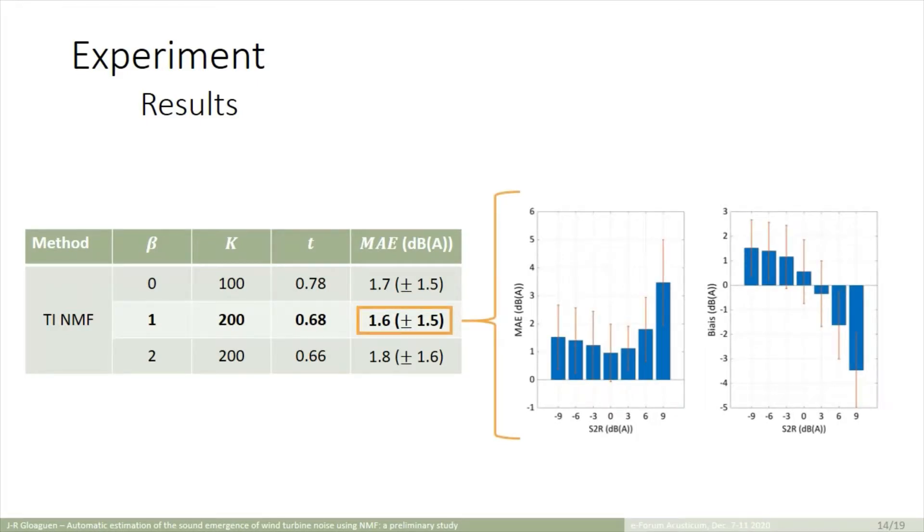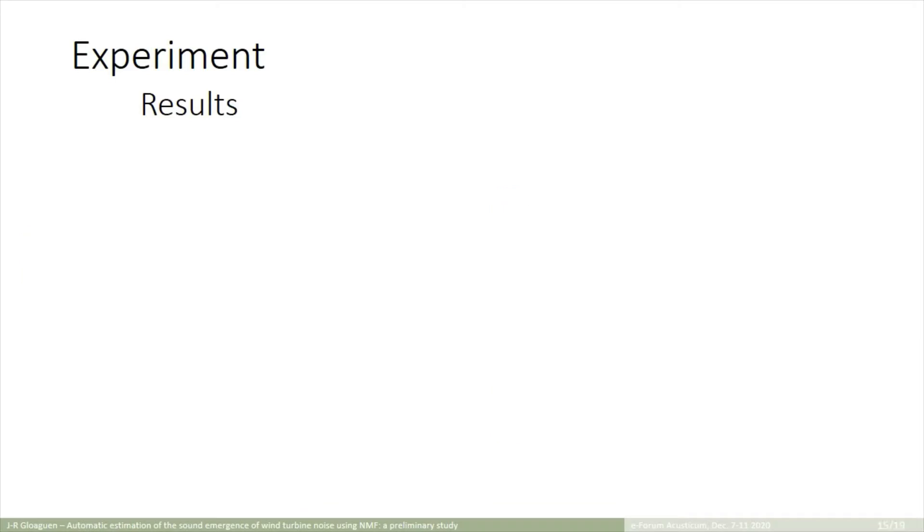So, here, each bar corresponds to the mean absolute error on the 30 scene for each value of S2R, and we add, on the right, the bias. We can clearly see two distinct parts, the first one where NMF overestimates the sound emergence, and the second part where the method underestimates the emergence. We remark that the error increases strongly, especially at S2R equals plus 9 dBA, where the error exceeds 3 dBA. But, except this case, the results are satisfying because they do not exceed 2 dBA, from minus 9 to 6 dBA, which is at 6 dBA equivalent to a sound emergence of around 7 dBA. So, it is far superior to the limit of the regulation.